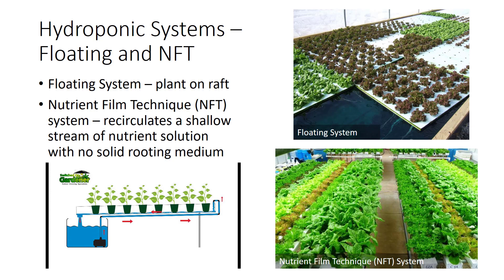Hydroponic systems are typically used in greenhouses in the winter to grow high-value crops such as tomatoes, lettuce, cucumbers, snapdragons, and a variety of other flowering crops and vegetables. In all cases, aerating nutrient solutions is important to maintain oxygen levels and avoid carbon dioxide buildup, which can be toxic to plants.